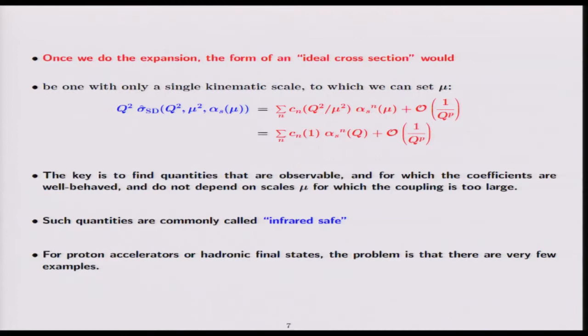Once we do the expansion, the form of an ideal cross-section would be one with only a single kinematic scale to which we can set the renormalization scale. We have a kinematic scale, and times below that we absorb into the coupling. We see here an expansion that, if we just do it in an arbitrary scale with the coupling, we get a bunch of coefficients that depend upon ratios of q² over μ². We choose μ equal to q because this is an observable, and we get just coefficients of order unity times an expansion in α_s(q). As q gets large, α_s gets small. The key is to find the quantities that are observable in which the coefficients are well behaved and don't depend upon scales μ for which the coupling is too large.